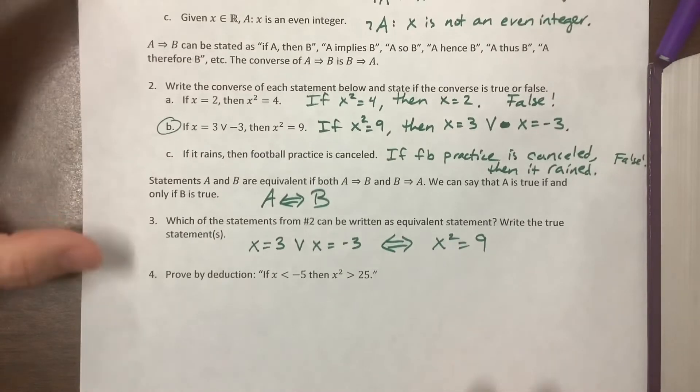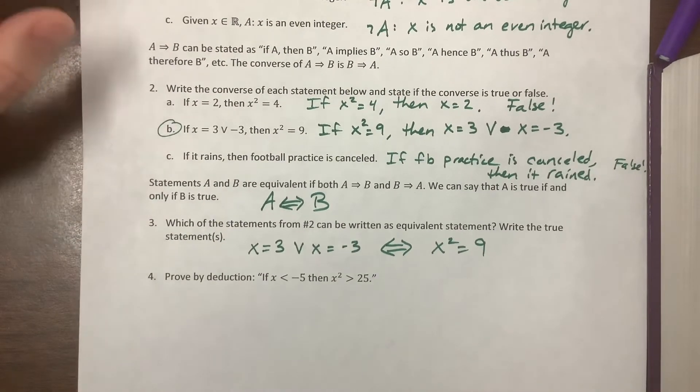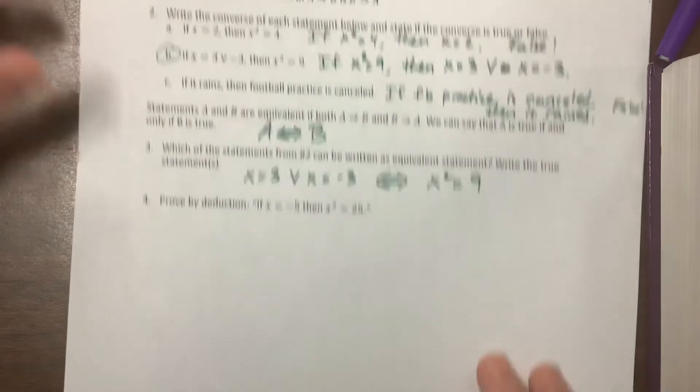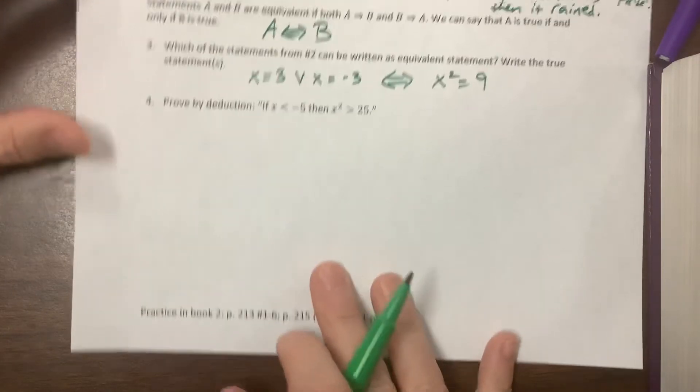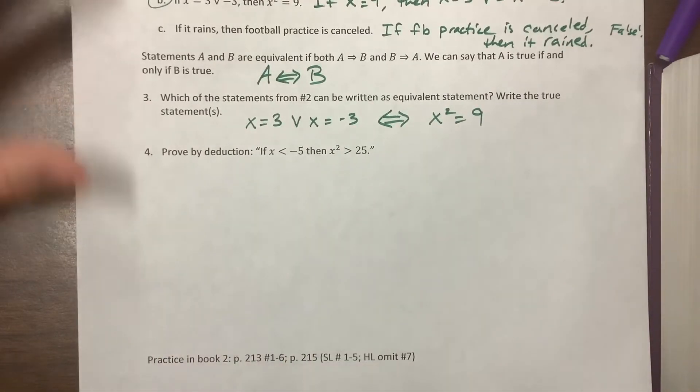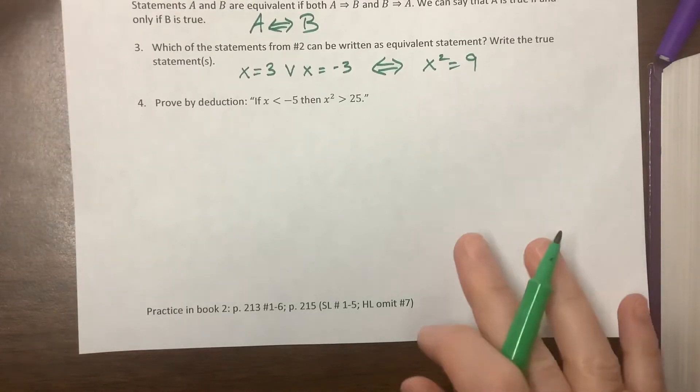Those three questions were from the first section in our chapter on proofs. I want HL and SL to do page 213, problems 1 through 6. This proof is going to lead us into page 215, which I have a different assignment for HL and SL.